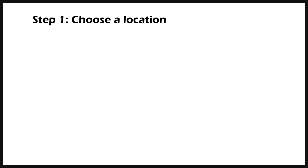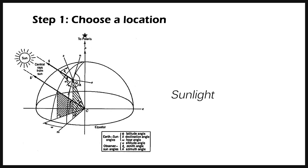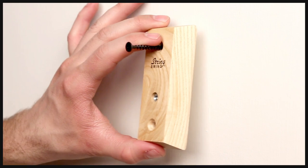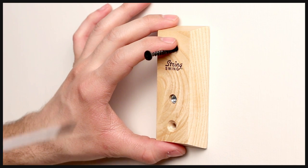Start by choosing a location for the hanger. Take into consideration environmental conditions such as sunlight, temperature and humidity, which could adversely affect your instrument. The next step is to place the mounting block or plate on the wall and drive the screw into the drywall.